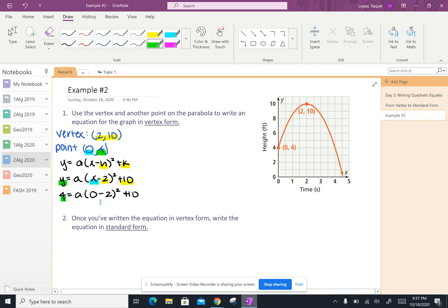And now I've gone ahead and substituted in all of my values. I can start working backwards and simplifying this equation to solve for a. So I'm going to start by simplifying the stuff inside parentheses. So I've got 4 equals a